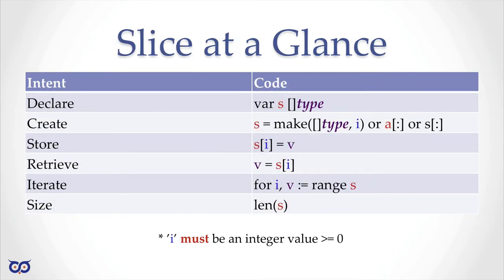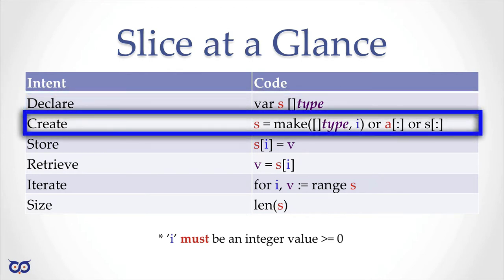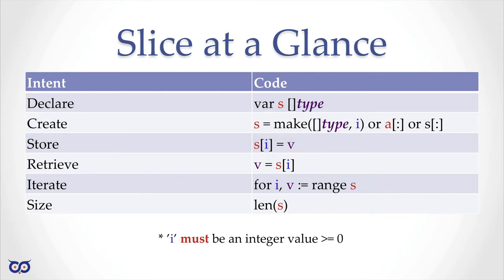With slices things look almost the same except for the distinction between declaring and creating. Declaring a slice gives you a variable that points to an underlying array but without any storage. To have storage you either use the make function or slice an existing array or another slice. Once you have a slice you can use integer indexing greater than zero but less than the size, store and retrieve values, range over it, and calculate length with the built-in len function.